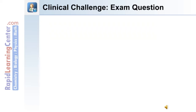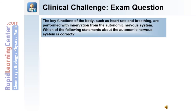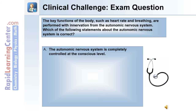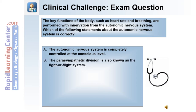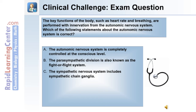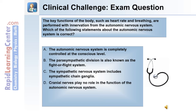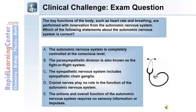Here's a clinical challenge exam question based on what you've learned. The key functions of the body, such as heart rate and breathing, are performed with innervation from the autonomic nervous system. Which of the following statements about the autonomic nervous system is correct? A: The autonomic nervous system is completely controlled at the conscious level. B: The parasympathetic division is also known as the fight-or-flight system. C: The sympathetic nervous system includes sympathetic chain ganglia. D: Cranial nerves play no role in the function of the autonomic nervous system. Or E: The actions and overall function of the autonomic nervous system require no sensory information or impulses.